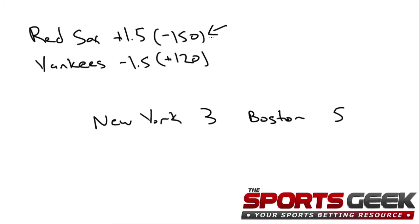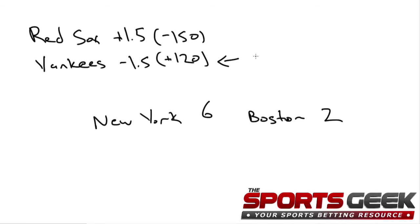Let's take a look at one more example. In this one we're going to go with New York winning six to two, and of course they only have to win by two or more to win. So here a bet on the Yankees on the run line would have won.